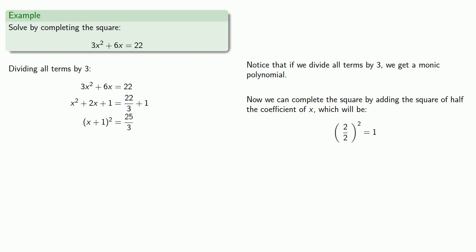And now we have square equal to number, so we can take the square root of both sides. Don't forget we have to use plus or minus. And we can solve for x by subtracting 1 from both sides.